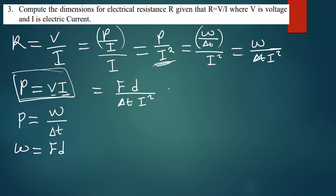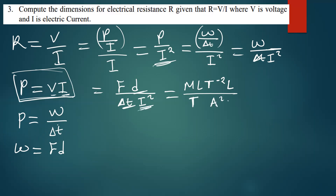Now it's just a matter of putting in the dimensions. The dimensions for force are M¹L¹T⁻². The distance or displacement is given by L. Everything is divided by delta t, which is simply T, and I squared gives us A squared — since the dimension for current is amperes, we write A.